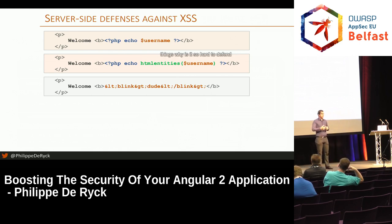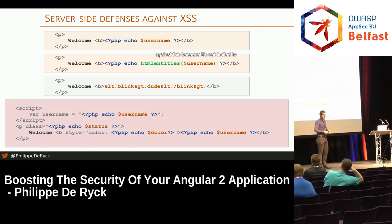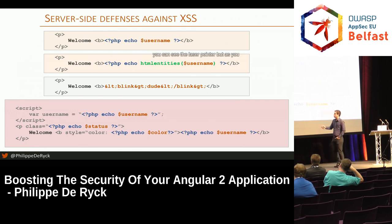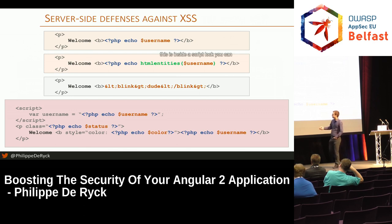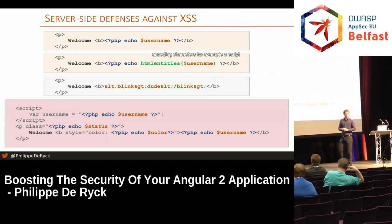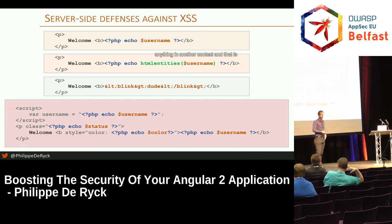What makes this so hard to defend against? It's not limited to one output — it's everywhere. Your whole application is full of outputs in all kinds of different contexts: inside a script block, inside an HTML attribute, inside an HTML tag. All of these contexts require a different way of encoding characters, and that is why cross-site scripting is so difficult.